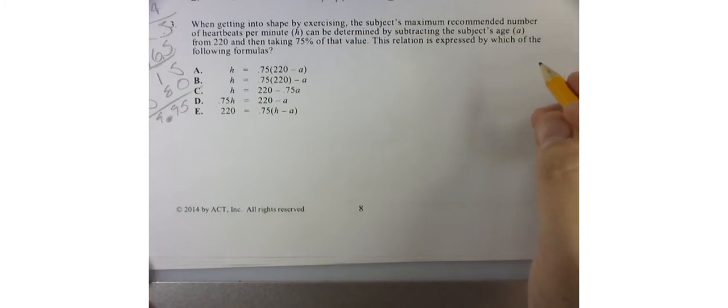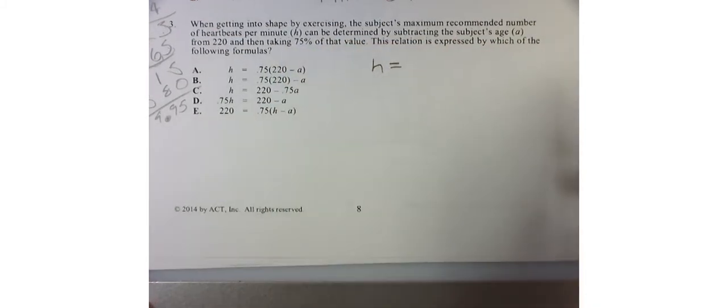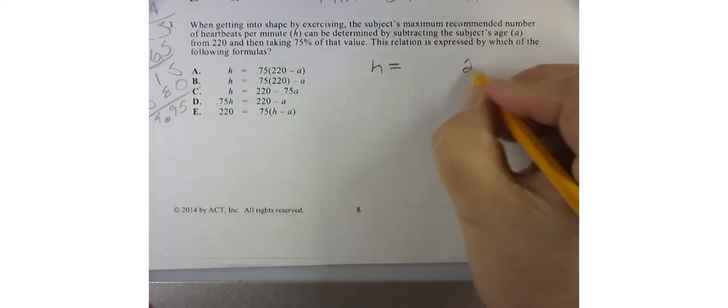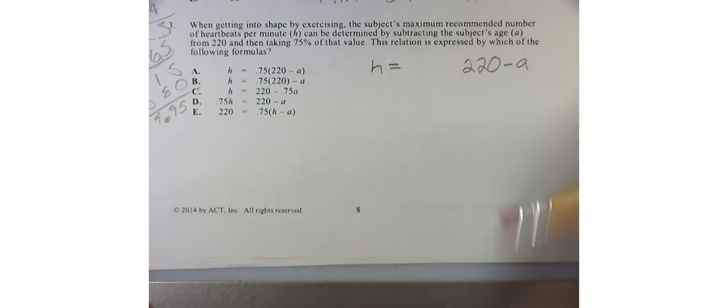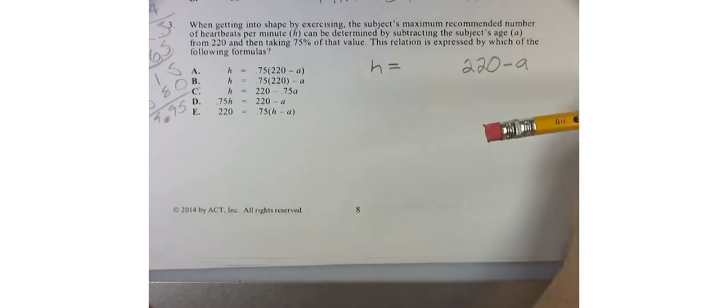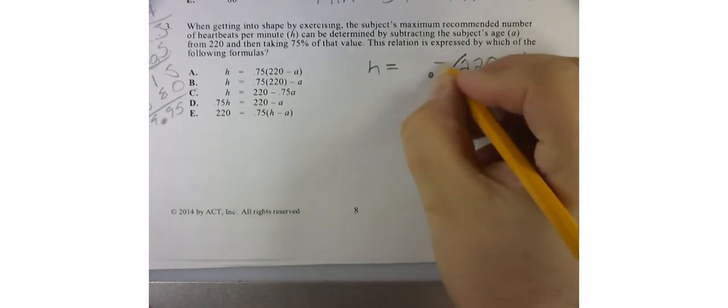So the maximum recommended heartrate is going to equal: you determine that by subtracting their age from 220 — so 220 minus their age — then you have to take 75% of that value, which means multiplying it by 0.75.